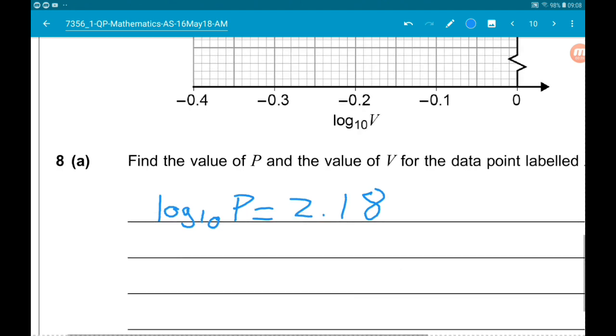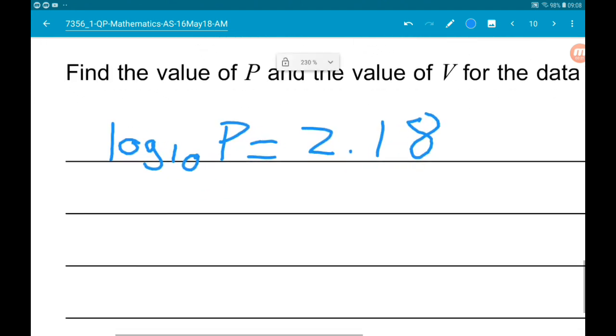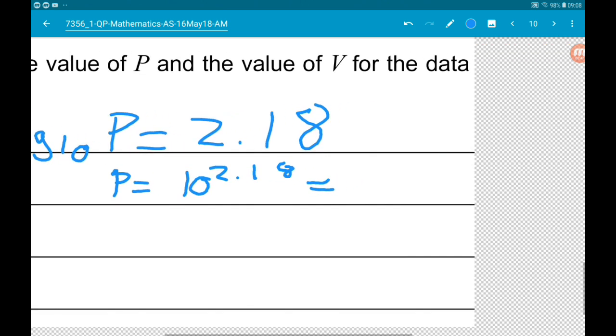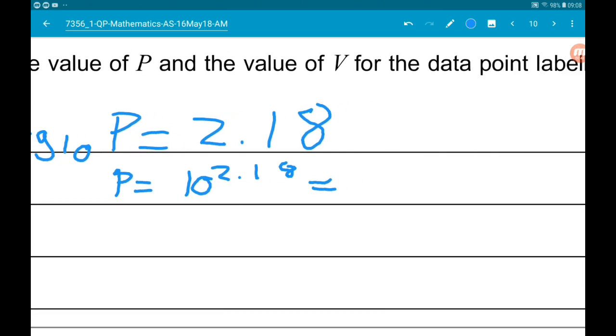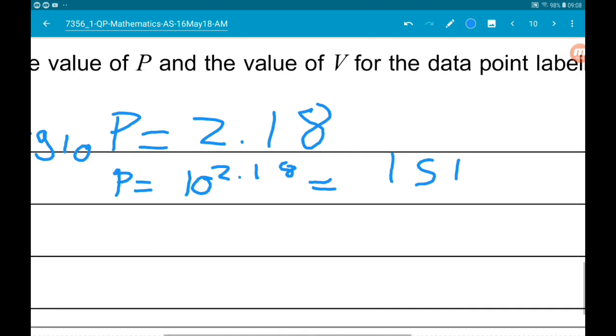Now that is asking 10 to what power is equal to P, or 10 to the 2.18 is equal to P. So P is 10 to the 2.18. Now if we go to three significant figures that's going to give us 151.